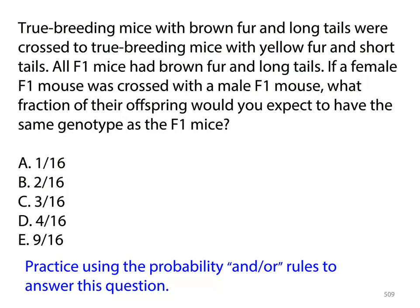Let's go through another example. Stop the lecture, read through the question, and work through it together — but don't pick an answer yet. When you tackle this problem, the first thing you see is 'true breeding,' which means homozygous. Write down what you know: true breeding mice with brown fur and long tails crossed to homozygous mice with yellow fur and short tails. All of the F1 mice had brown fur and long tails — this is important, write it down. You have to decide what letters to use. I suggest B for fur color because brown is dominant — you know this because all F1 mice are brown and heterozygous.